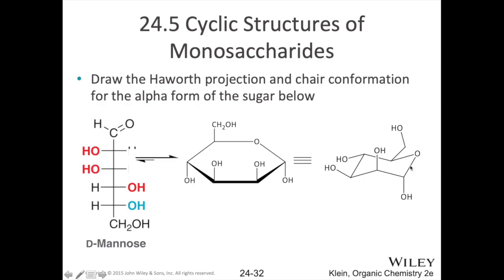Drawing the chair conformation is also good practice. Use the oxygen as a reference point on the chair. If you have a group pointing downwards on a 'down' carbon, it's axial; likewise, pointing upwards on an 'up' carbon is also axial. If you have an up group on a down carbon, it's equatorial, and vice versa. With the oxygen as an up atom, alternate your carbons: down, up, down, up, down — and place your groups accordingly as axial or equatorial.